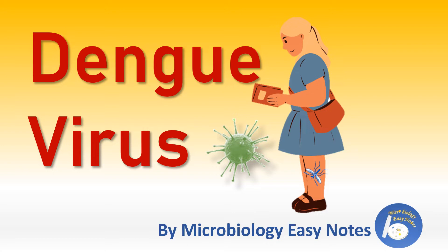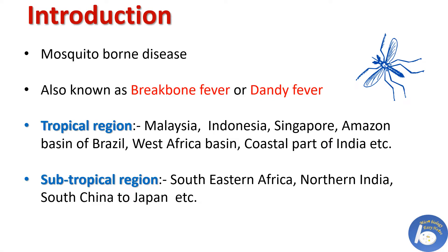We will cover the structure and serotype of the virus, its replication, and clinical representation. Dengue is a mosquito-borne disease, also known as break bone fever or dandy fever. It is one of the most common diseases in tropical and subtropical regions — regions close to the equator that are warm and wet, or hot and humid, with an average monthly temperature above 18 degrees Celsius. Examples include Malaysia, Indonesia, Singapore, and the Amazon basin of Brazil.